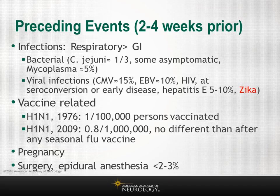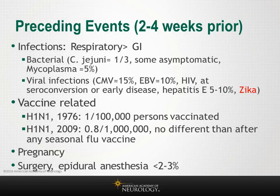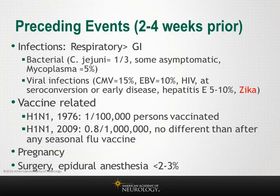Two-thirds of patients report symptoms of a respiratory or gastrointestinal tract infection before disease onset, and in about half a specific infection can be identified. Respiratory infections are more frequent than GI infections. Of GI infections, the vast majority are due to Campylobacter jejuni. Mycoplasma is also implicated. Of viral infections, cytomegalovirus is most common, usually associated with a respiratory antecedent. Epstein-Barr virus, HIV at seroconversion or early disease, hepatitis C, and Zika have also been associated.